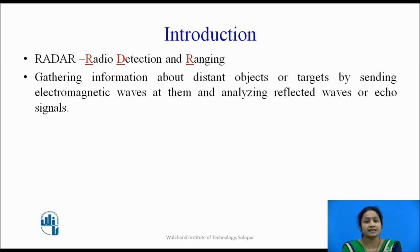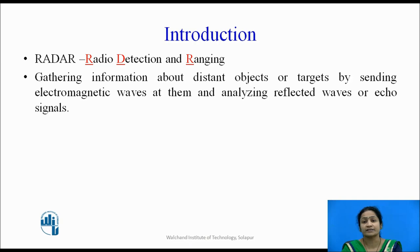It detects the signals or a target by transmitting electromagnetic signals and determines the range of that target. As it is transmitting radio signals — electromagnetic waves — to detect the target, and also detects the range at which the target is located, that is why it is called Radio Detection and Ranging. The basic radar concept was inspired by the bat, in which echo signals are received. Based on that concept, this radar concept was developed.